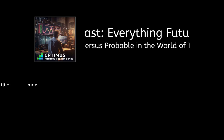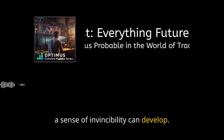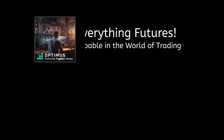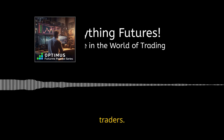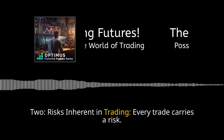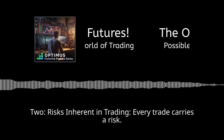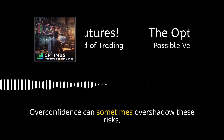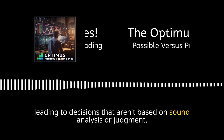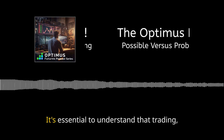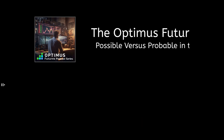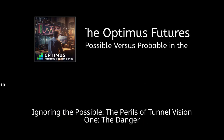It's human nature to seek assurance, and in the trading world, when events align with our predictions repeatedly, a sense of invincibility can develop. But it's paramount to remember that probable does not equate to certain — the market has a way of humbling even the most seasoned traders. Every trade carries a risk, and overconfidence can overshadow these risks, leading to decisions not based on sound analysis. Trading, at its core, is a game of probabilities, not certainties.